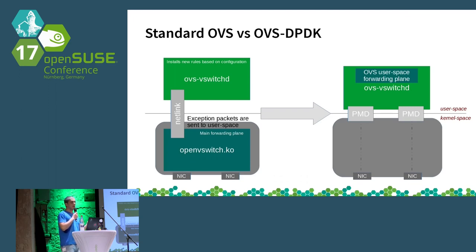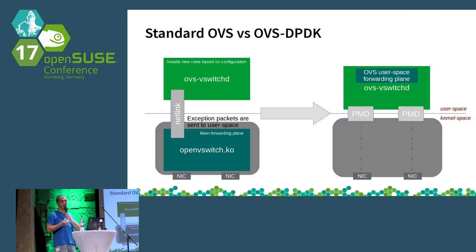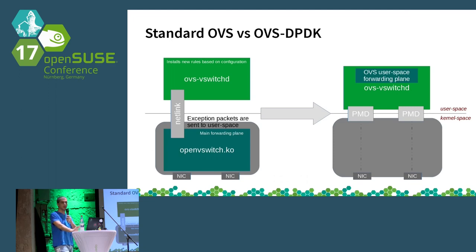On the right-hand side with OVS-DPDK, the kernel module disappears. All you have is a small interface offered by either the IGB-UIO, UIO-PCI generic, or VFIO-PCI kernel module to expose the network card's BARs to drivers running in user space. These drivers are called poll mode drivers — named because they don't use interrupts but instead keep polling the NIC for incoming packets. The forwarding plane sits entirely in user space.